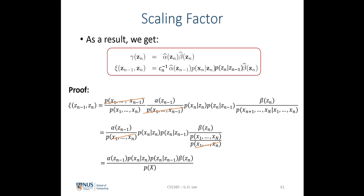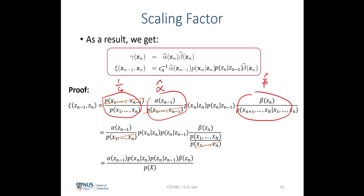We can also compute zeta over z_{n-1} and z_n using alpha-hat and beta-hat computed from the scaled forward and backward recursion, normalizing by c_n — that is, dividing by c_n or multiplying by c_n inverse. Writing out the expression: the 1/c_n term, alpha-hat, and beta-hat appear, and by cancellation and the product rule we end up with the expression equivalent to zeta(z_{n-1}, z_n).